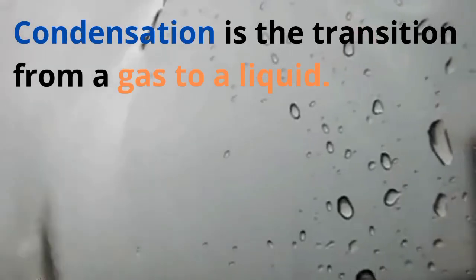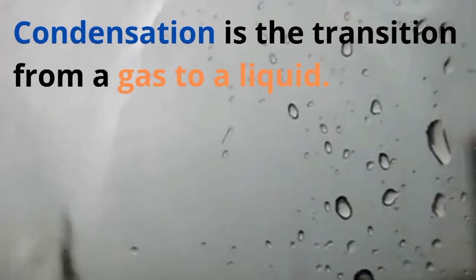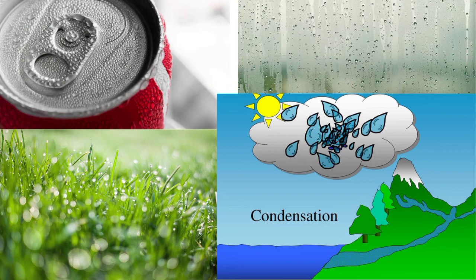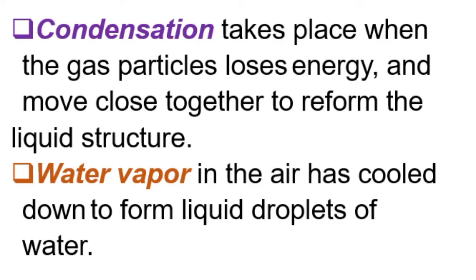The opposite of vaporization is condensation. Condensation is the transition from a gas to a liquid. Examples include water droplets on a cold can of soda on a hot day, dew on the grass every morning, a steamed-up mirror after a hot bath, and the formation of clouds or a foggy windscreen in a car. Condensation takes place when gas particles lose energy and move closer together to reform the liquid structure, such as water vapor cooling to form liquid droplets.